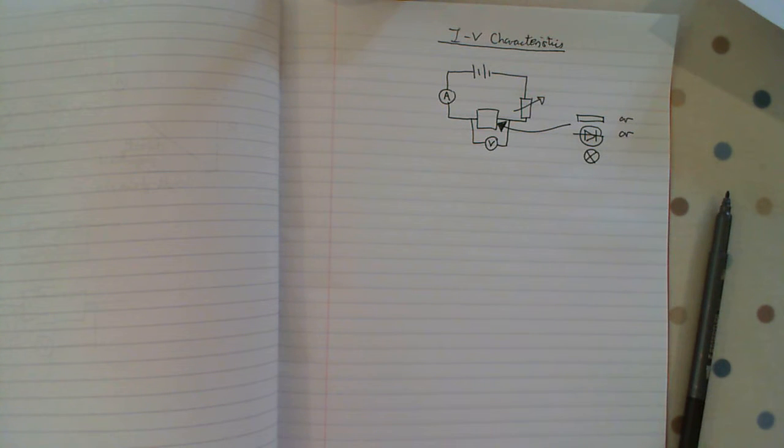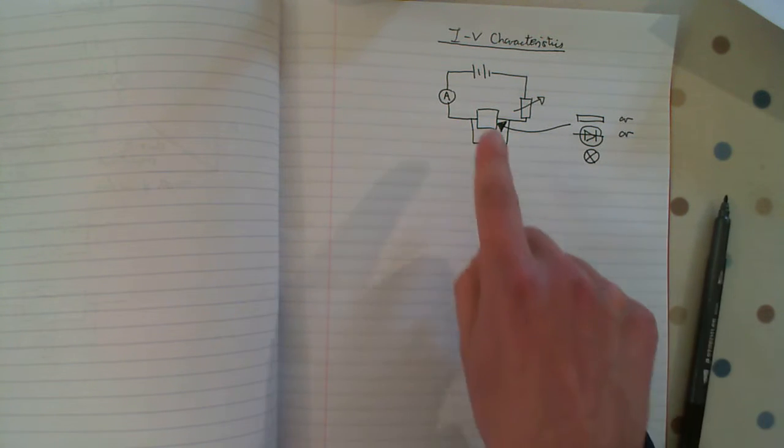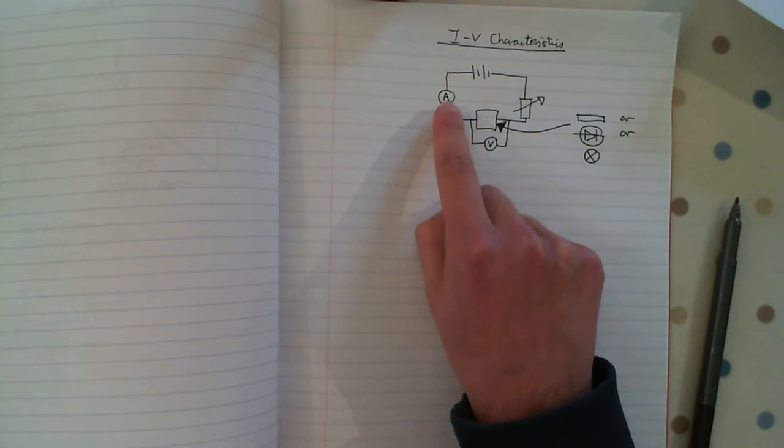This is a required practical revision video for the IV characteristics, or the current potential difference characteristics. We have our power supply and our ammeter in series.